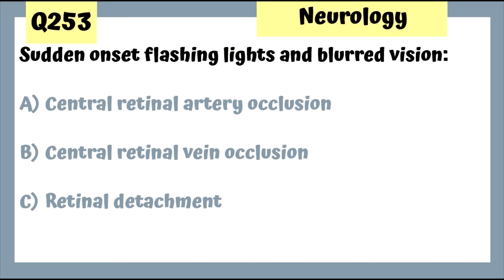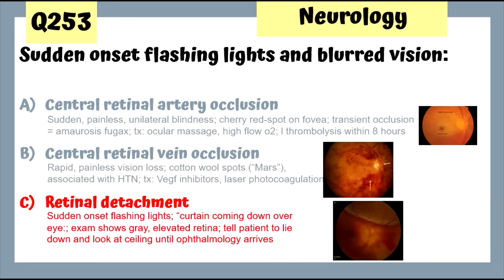Question 253: Sudden onset flashing lights and blurred vision — this is retinal detachment. The patient sees flashing lights and blurry vision and may describe a curtain coming down over the eye. Central retinal artery occlusion shows the cherry red spot. Central retinal vein occlusion shows hemorrhage and cotton wool spots on fundoscopy.